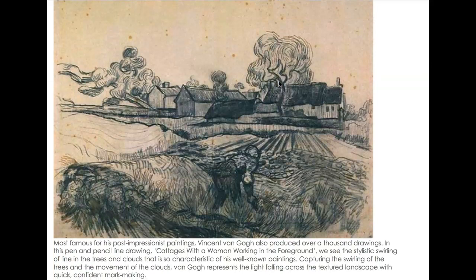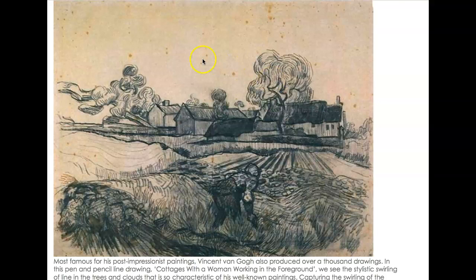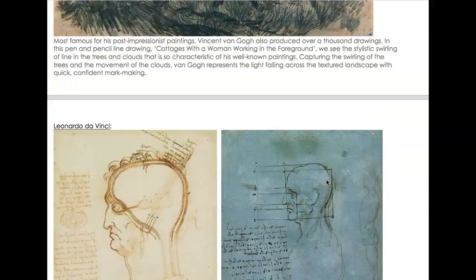Vincent van Gogh uses a wide range of different mark-making techniques. His quintessential swirls appear in the trees, but he also has variations of hatched marks — simple parallel lines, overlapping parallel hatch marks, and cross-hatch marks — to convey the different types of crops you see in these fields. Really interesting.